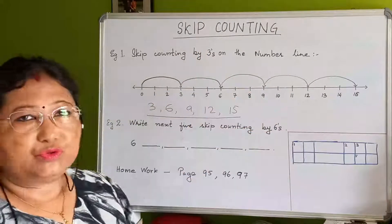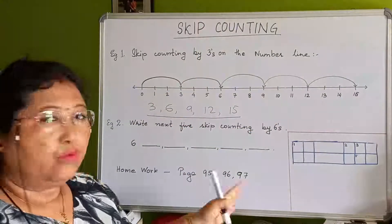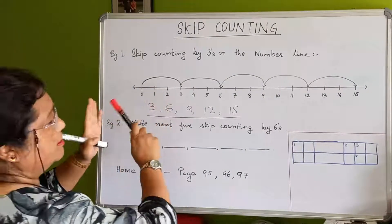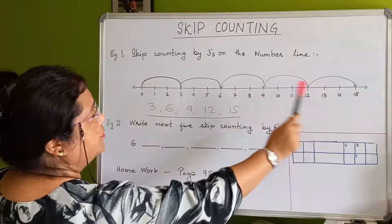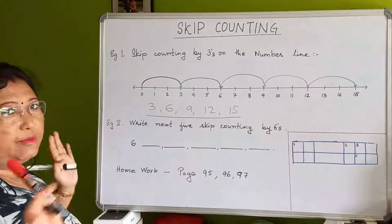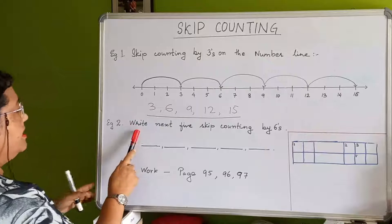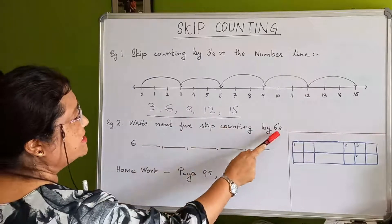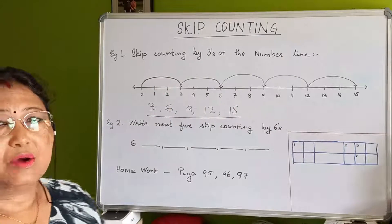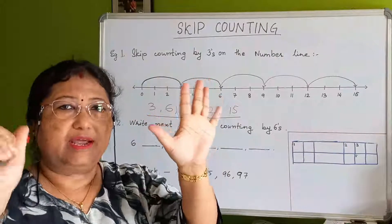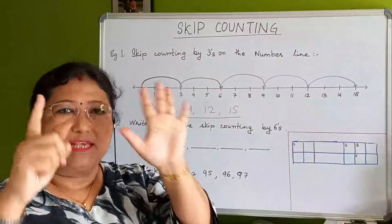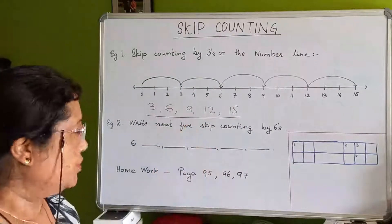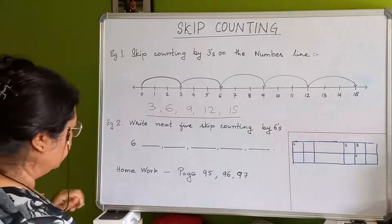There are some exercises in your book you can do like this. Now next, this one is skip counting without a number line — simple counting. The question is skip counting by six. We have to jump how many times? Six numbers each time. You add six, then again jump six numbers, like this.